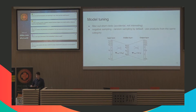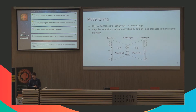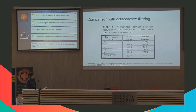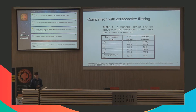To tune the model and get the best accuracy, you should filter out short clicks, which might be noise. The models also do sampling of negative examples, and it is better not to do this randomly but from products within the same category. A research paper comparing this approach to simple collaborative filtering showed it achieved better accuracy, making it powerful enough for production.